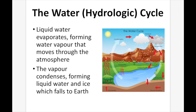First up is the water cycle, otherwise known as the hydrologic cycle. Liquid water evaporates, forming water vapor that moves through the atmosphere — that process is evaporation. The water vapor then condenses, forming liquid water and ice, which falls to earth. We get condensation, it moves to the clouds, and then falls as precipitation back down to earth.